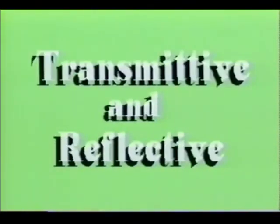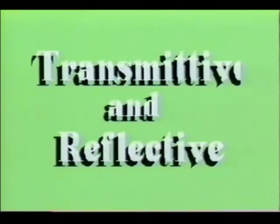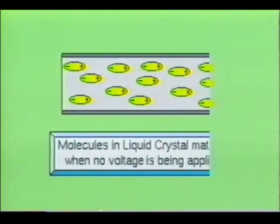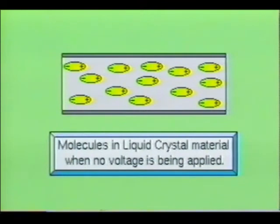There are two types of liquid crystal devices: the transmittive and the reflective. Even though their operations are quite similar, there are major differences in their constructive techniques. The molecules in ordinary liquids normally have random orientations. However, in liquid crystals, the molecules are oriented in a definite crystal pattern when not activated.